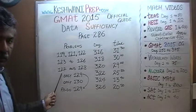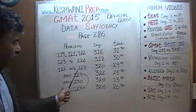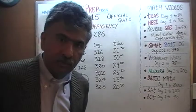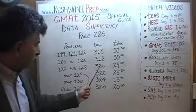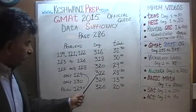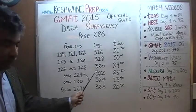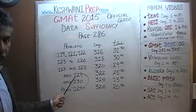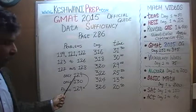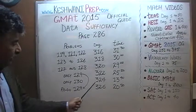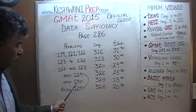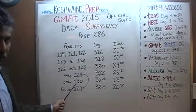Problems 127 and 128 were solved on day number 320. On day number 322, we did only problem number 129 — only one problem. Similarly, on the next day, day 324, we solved problem number 130.